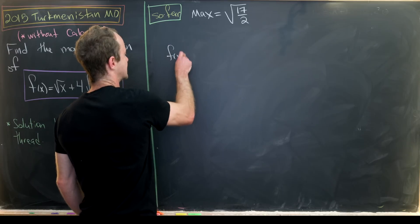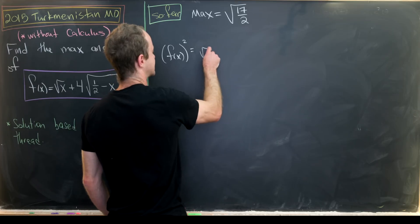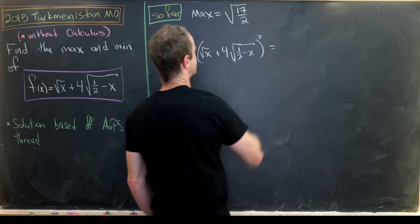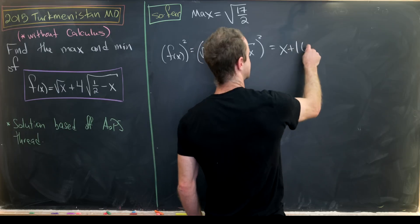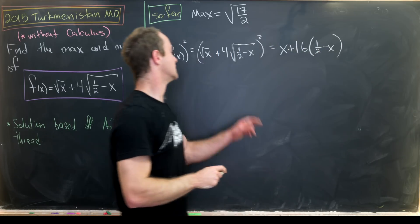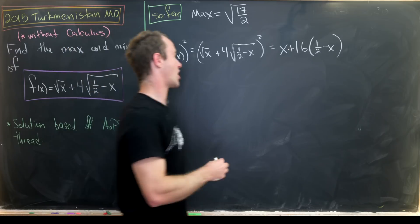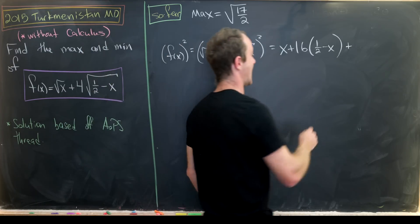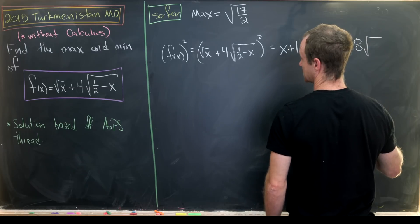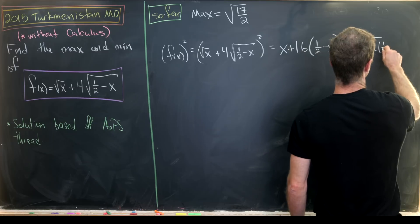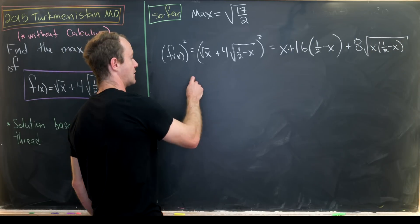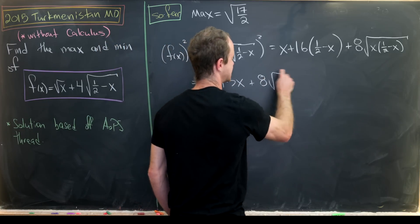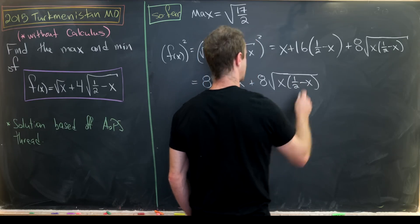So let's get to it. Let's calculate f of x quantity squared. So that's the square root of x plus 4 times the square root of half minus x squared. So multiplying that out will give us x plus 16 times one half minus x. So that would be the pure squares. And now we've got the cross term, which will be plus, let's see, this guy times this guy times 2. So that gives us an 8 out front. So we have 8 times the square root of x times one half minus x.